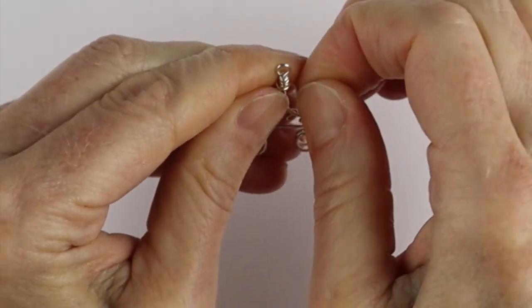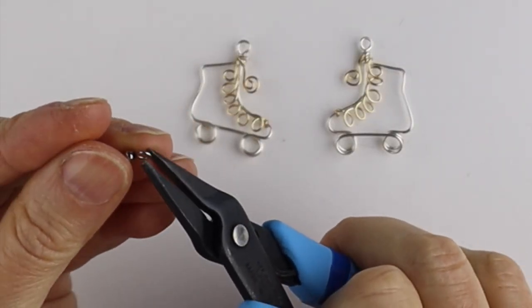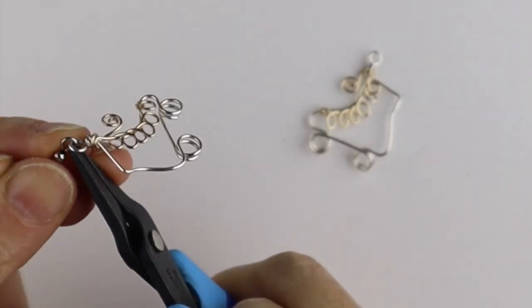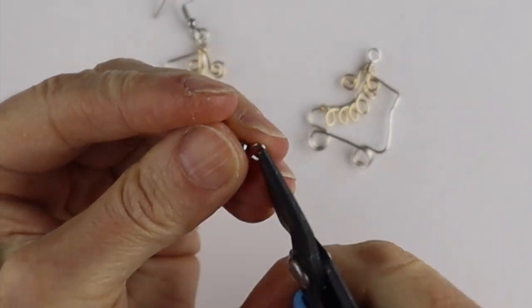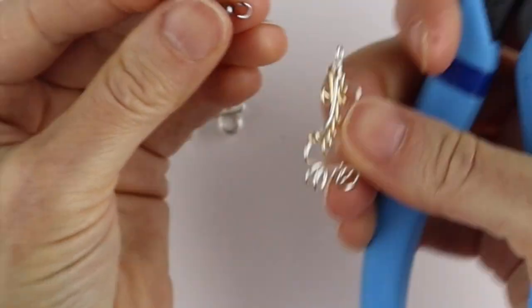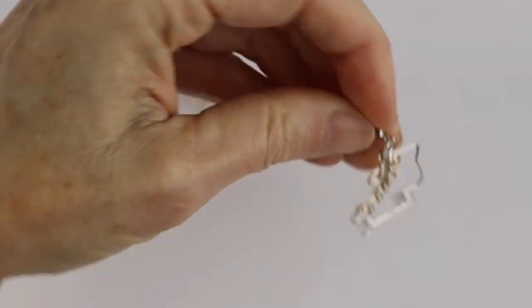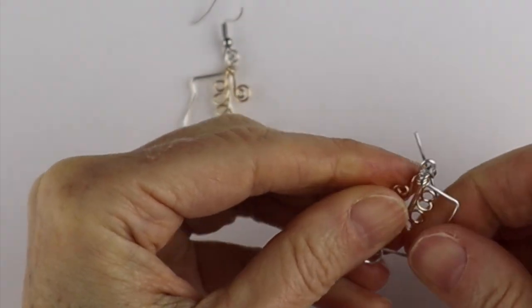And we'll take our earring hooks. I buy the surgical steel hooks—I get them at my wholesaler in Montreal. You can get them online too, probably on Etsy. Open this up, slide that one on, close it up. You can always do little adjustments on the wheels if you need to.